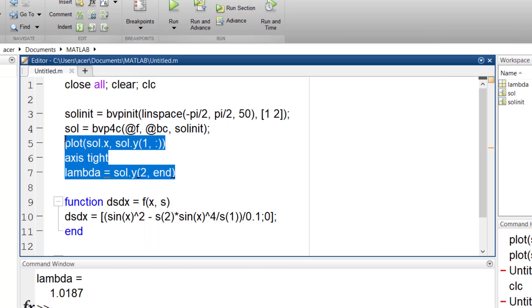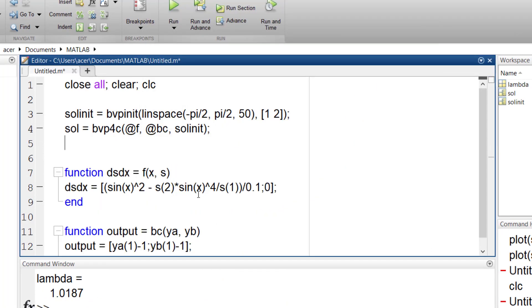I want to mention that for these special kinds of problems, where we have one equation with one unknown parameter, we can use bvp4c in a more advanced way. Here I define my equation. But I add one more input argument. MATLAB understands that this is a constant parameter.